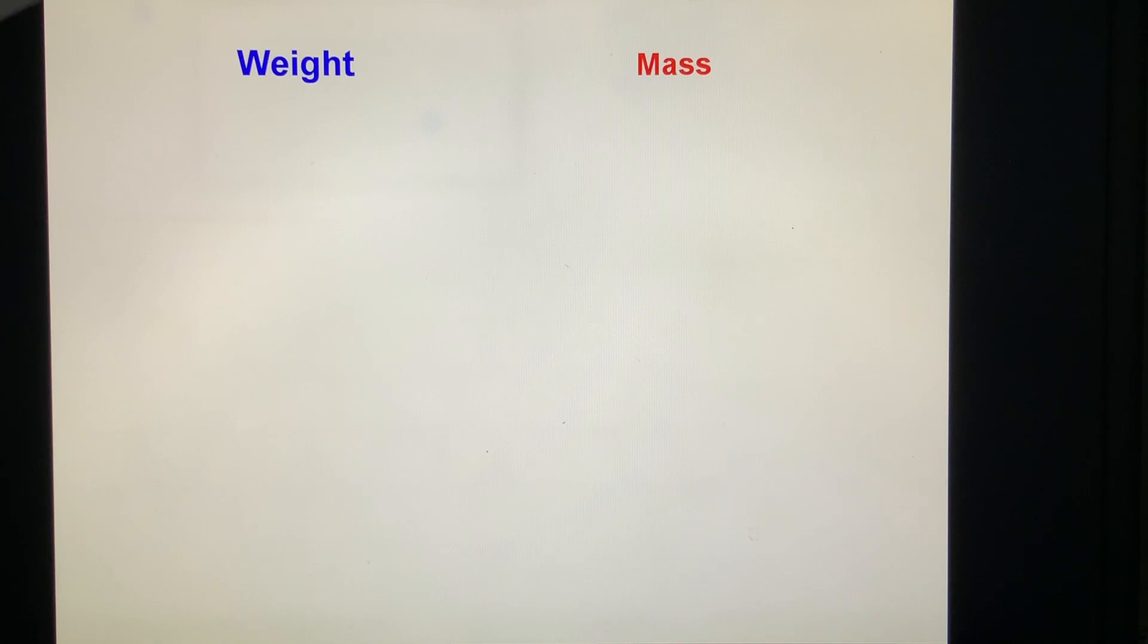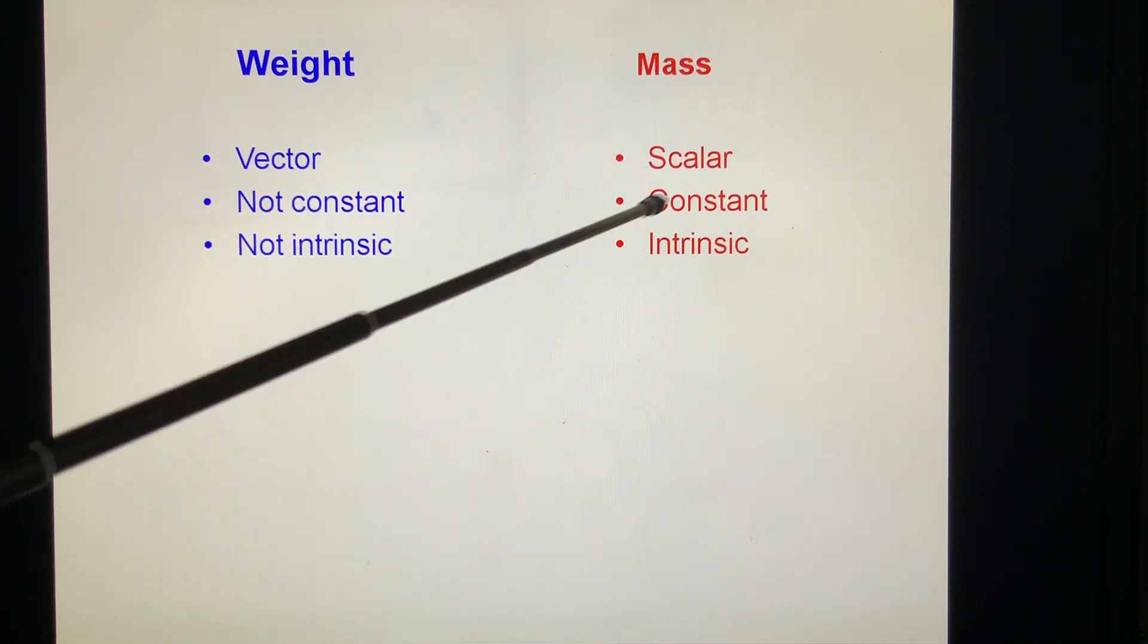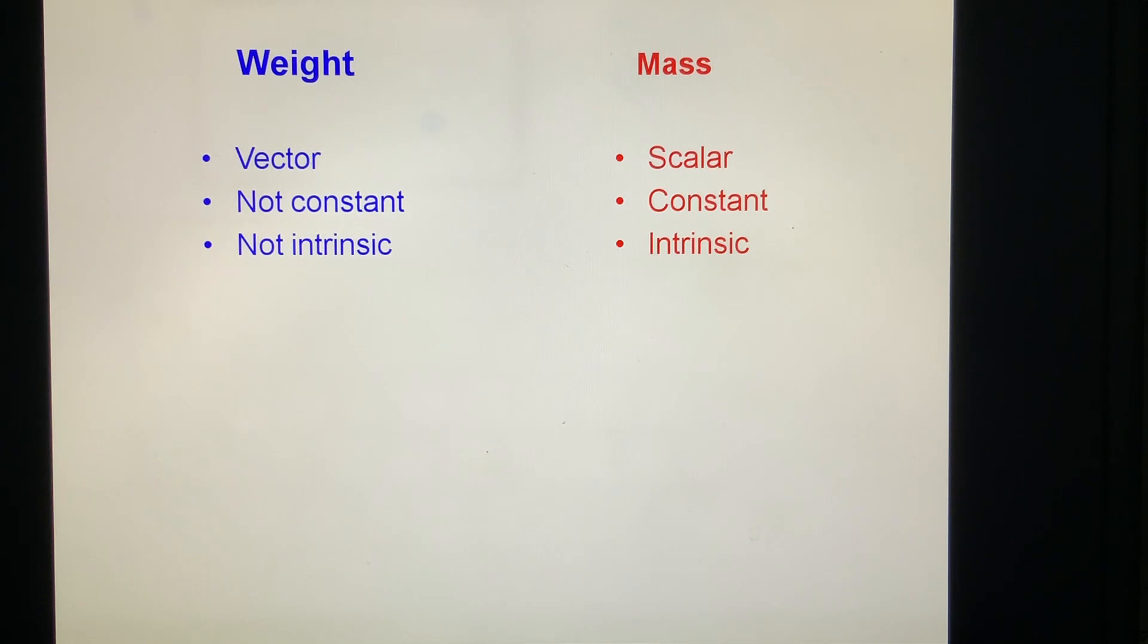Now compare the weight and mass. Weight is a vector, it's not constant. At different places, you take an object's weight, it differs. And it's not an intrinsic property of the body because it changes. And mass is a scalar, it's constant, it's intrinsic of the body. Everywhere, mass is the same, but the weights are different.